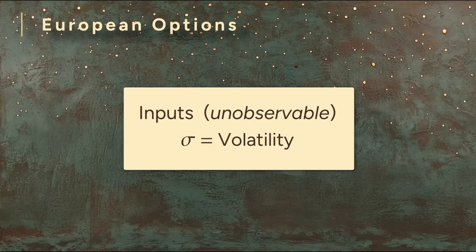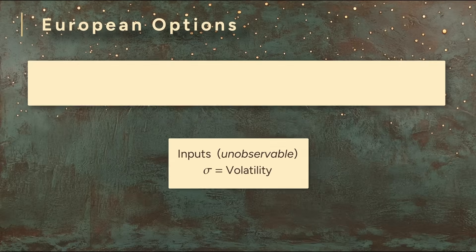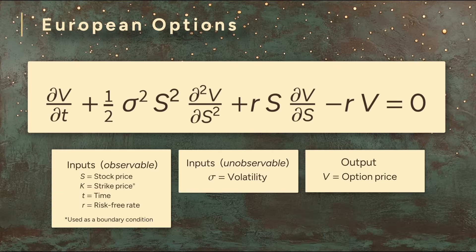So how do we get at this unobservable variable? The answer is to turn the problem on its head. For European options, quants have a well-established formula for estimating price. It's the Black-Scholes equation.